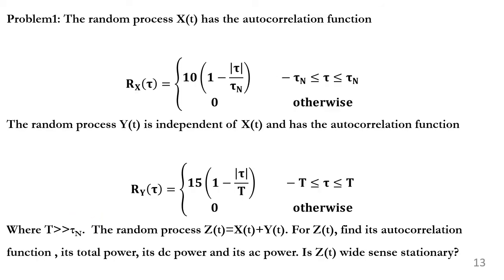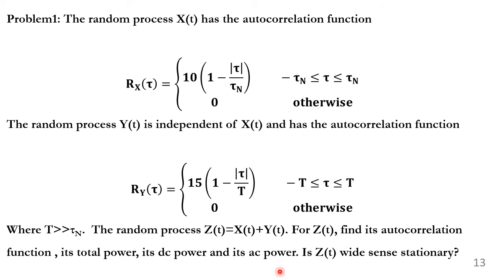Problem 1: The random process x(t) has autocorrelation R_x(τ) = 10(1 − |τ|/τ_n) for |τ| ≤ τ_n, and 0 otherwise. The independent random process y(t) has autocorrelation R_y(τ) = 15(1 − |τ|/τ_n) for |τ| ≤ τ_n, and 0 otherwise. The random process z(t) = x(t) + y(t). Find the autocorrelation of z(t), its total power, DC power, AC power, and whether z(t) is wide-sense stationary.